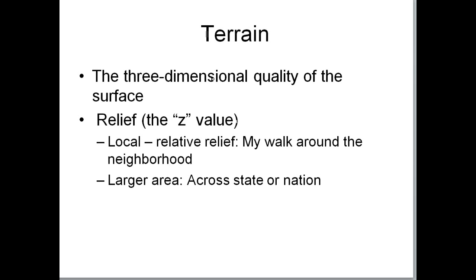The reading talks about different kinds of terrain and the idea that when we look at a terrain, we're trying to get a three-dimensional idea of the surface. That elevation value is often represented as the letter Z. When we think about latitude and longitude coordinates, we use Y and X, and then Z often stands for the elevation.